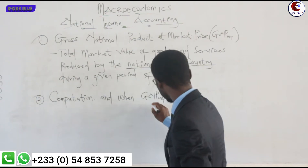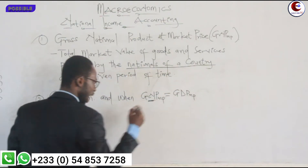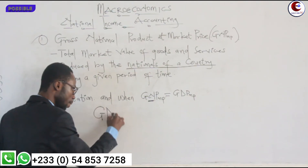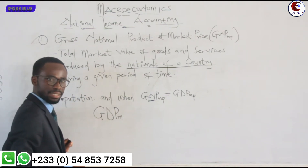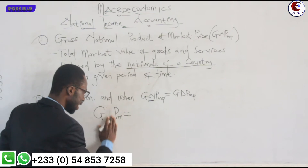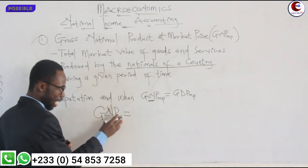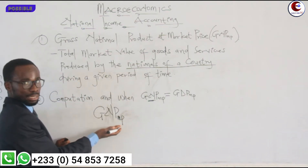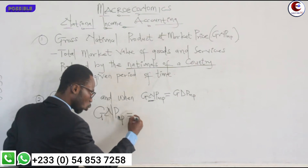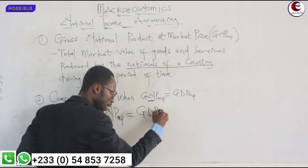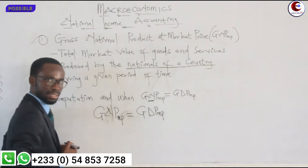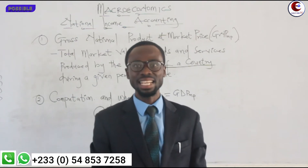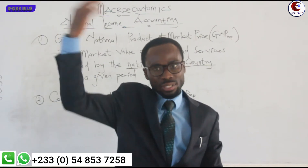Because it is national, when we are computing it we are saying: GNP at market price is equal to GDP at market price, plus the income from outside the country — the remittance.